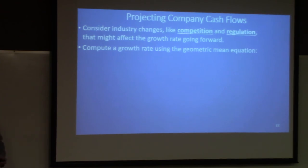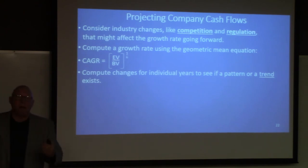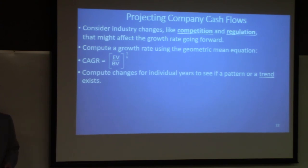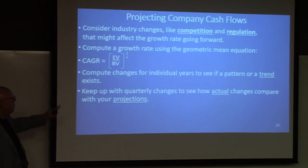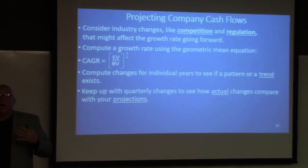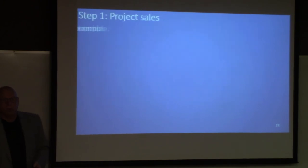We might compute the growth rate using the geometric mean equation — the CAGR. But we have to go beyond that. We're going to compute changes for individual years to see if there's a pattern or a trend. Be careful applying an average if there's a definite trend either up or down — we have to take that into consideration before we simply apply an average. Once we make projections, you keep up with quarterly changes to see how actual results compare with your projections and what adjustments need to be made.